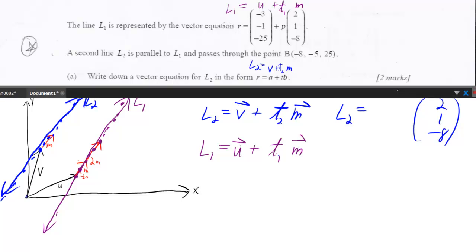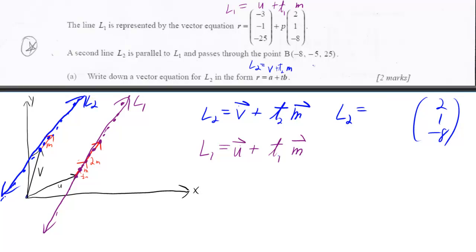And they want us to use t in front of it or we could use whatever it just has to be in that form. But let's use a t. And then they want us to make sure that it passes through point b. So that means we could start by going to point b which are the coordinates negative 8, negative 5, 25. And then we add our m a certain amount of times because we're allowed to use any scalar multiple that we want. So that's really all we have to do for part a.